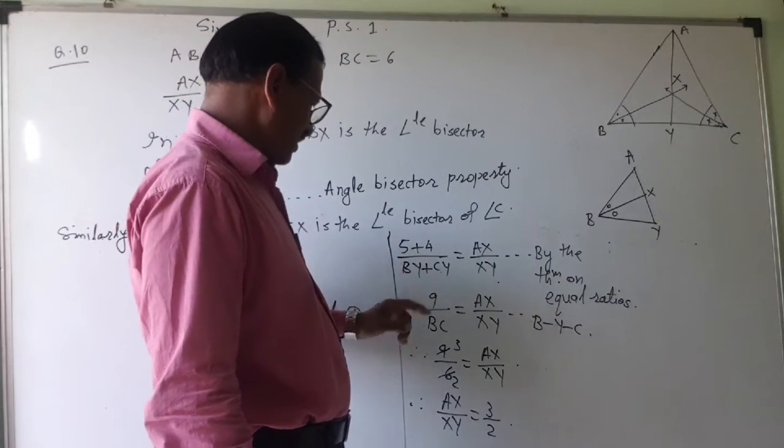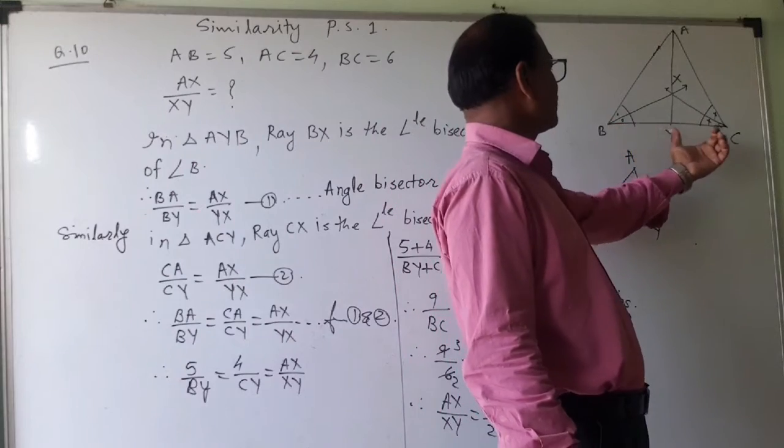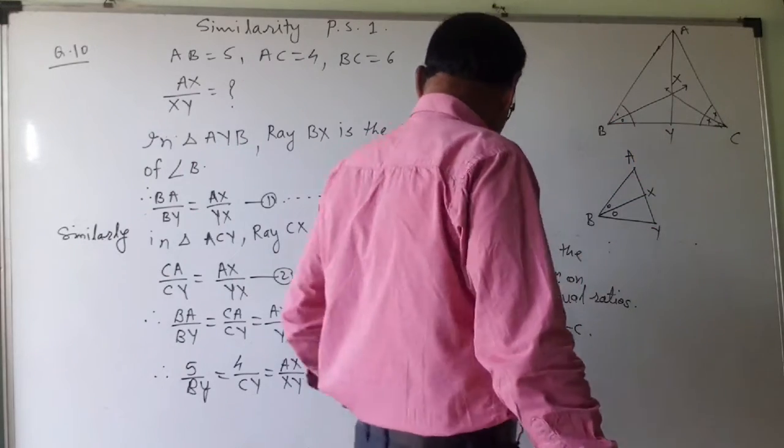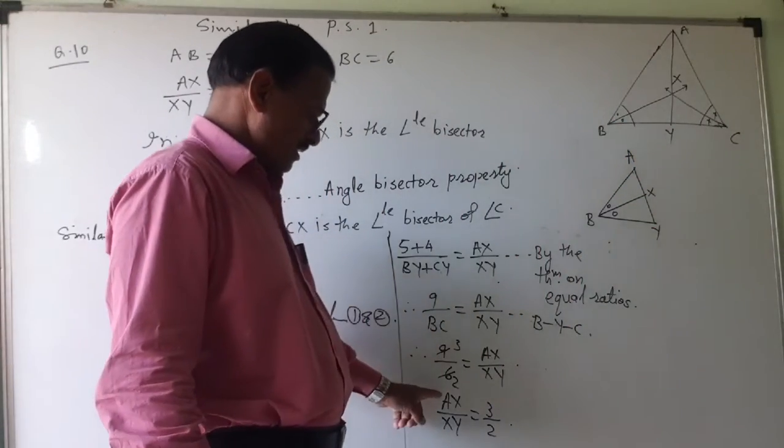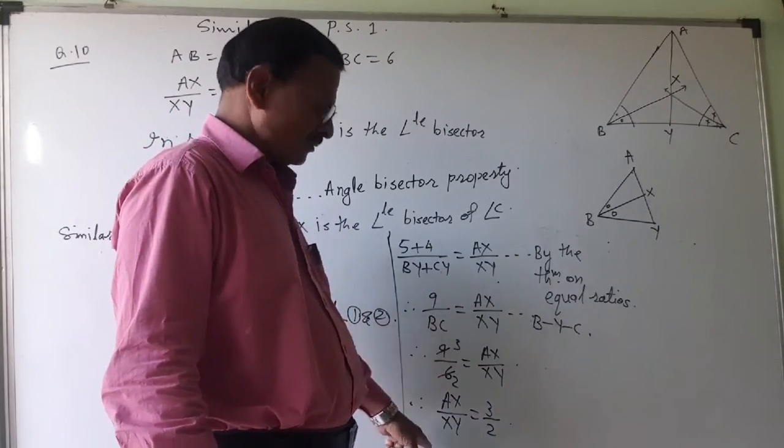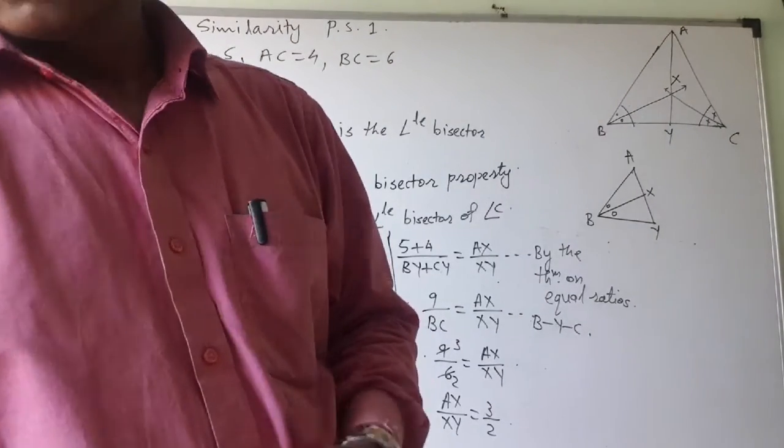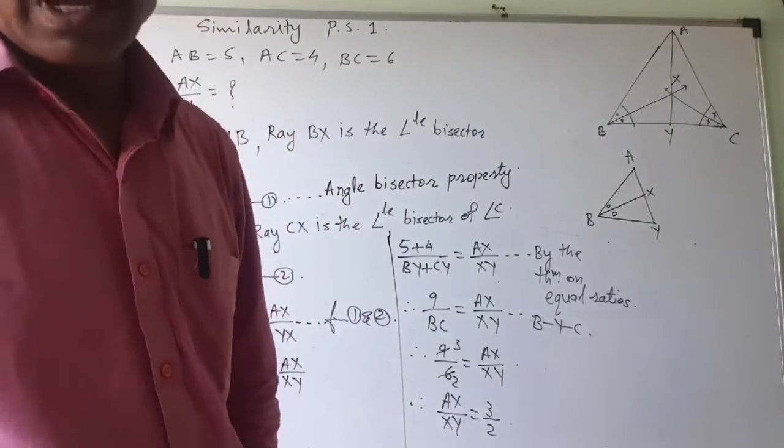Therefore, 5 plus 4 is 9. BY plus CY is nothing but BC. So BC. This is 3 upon 2. And so AX upon AY, that is. So this way you can have it.